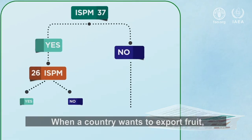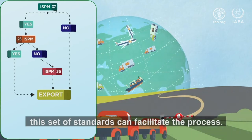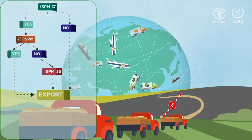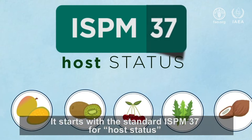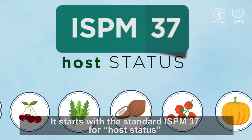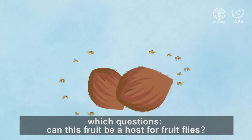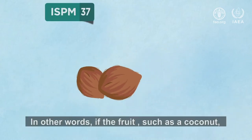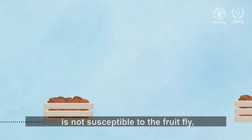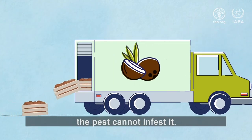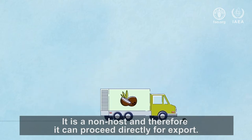When a country wants to export fruit, this set of standards can facilitate the process. It starts with the standard ISPM 37 for host status, which questions: can this fruit be a host for fruit flies? If the fruit, such as coconut, is not susceptible to the fruit fly, the pest cannot infest it. It is a non-host and therefore it can proceed directly for export.